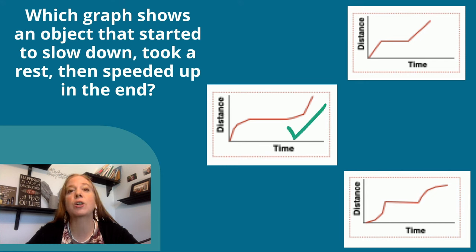So this graph shows that it's curving down in the beginning, so slowing down. Then it's a horizontal straight line, so it took a rest, and then it curved up, so it's increasing speed.